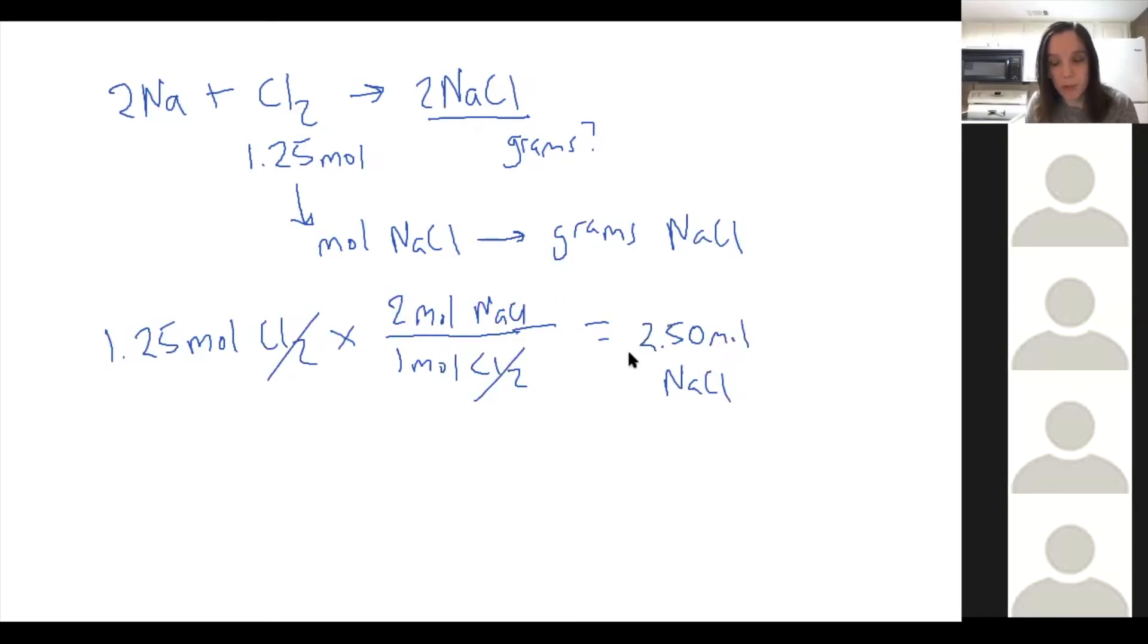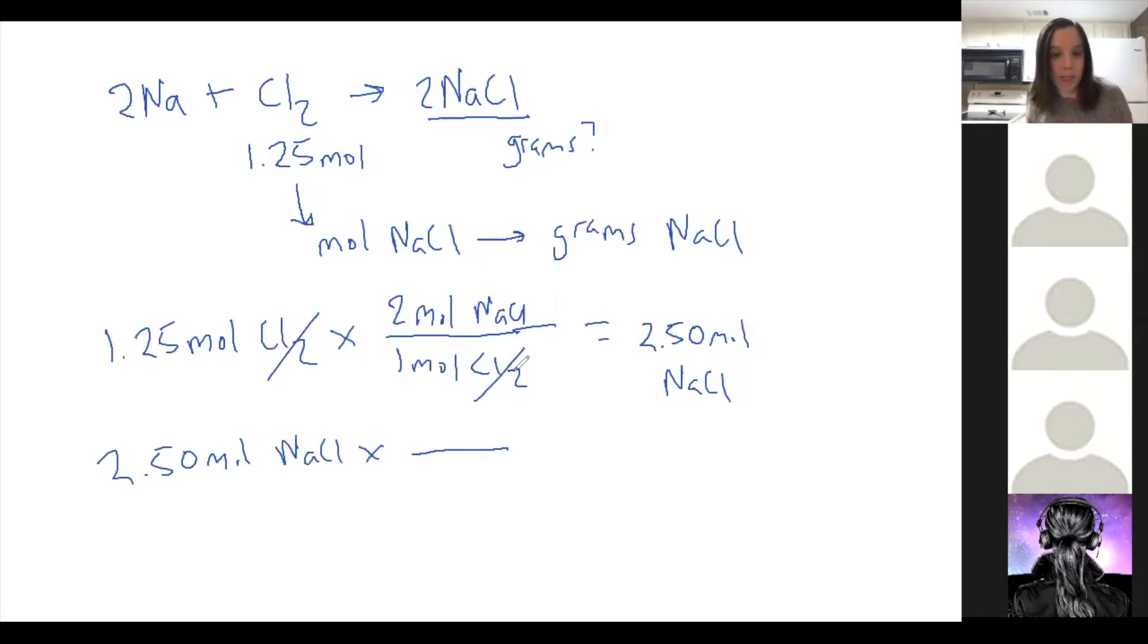So yesterday we'd be done at this point. But now we're going from moles to grams, so it's an additional step. We would take 2.5 moles of NaCl and multiply it by its molar mass to go from moles to grams. Sodium's molar mass is 22.9, chlorine is 35.5. Add those together, you get a molar mass of 58.44 grams per mole of NaCl. So we do 2.5 times 58.44, we get 146 grams of NaCl. So that's how we convert between moles to grams.